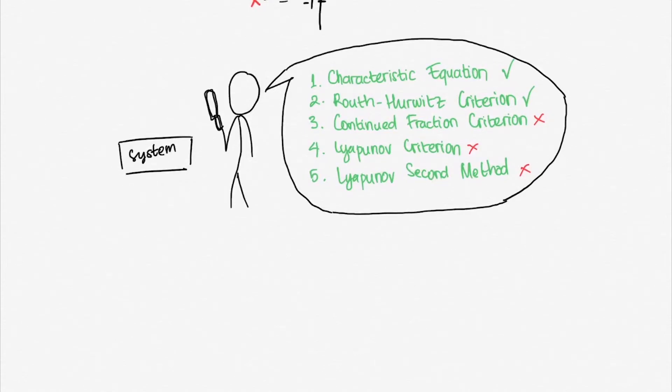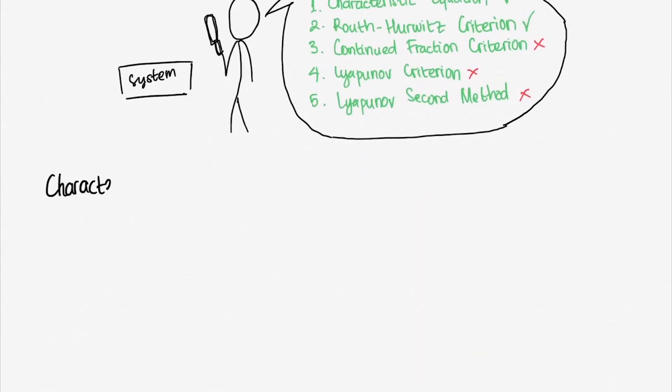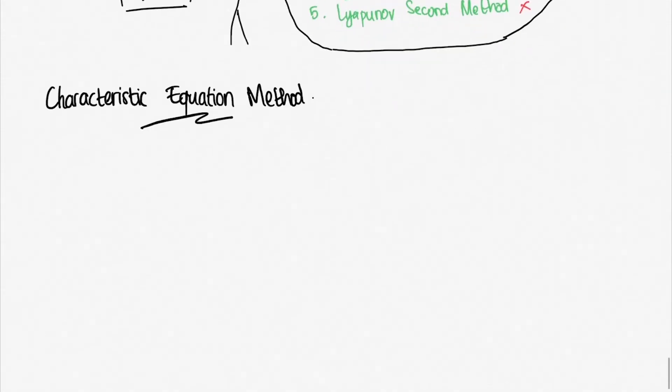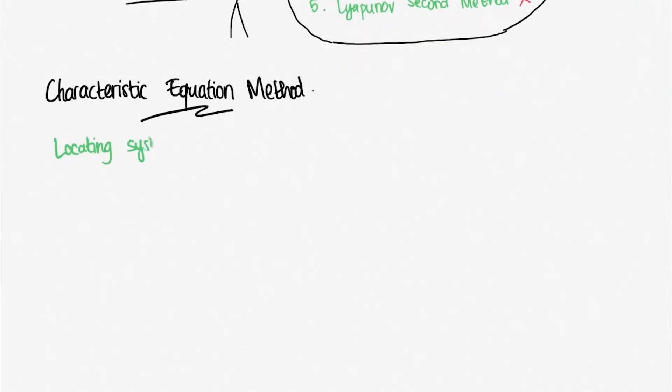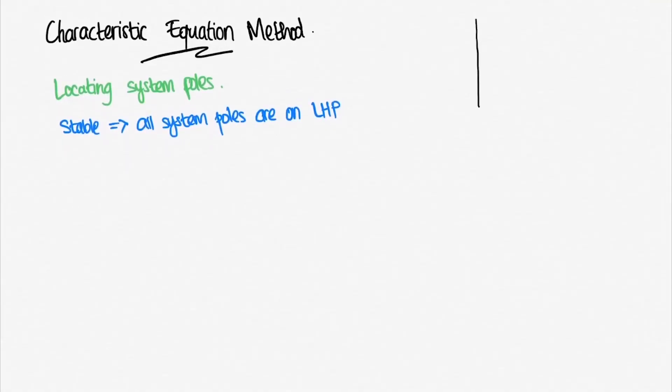First up is the characteristic equation method, the simplest one. This method only requires you to locate the system's poles. A system is said to be stable if all of the system's poles are located in the left half of our s-plane, or LHP for short. If there is only one pole on the right half plane, the system immediately goes unstable.